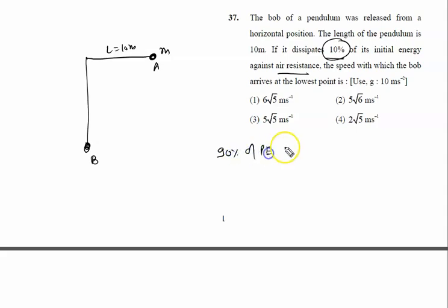potential energy at A equals kinetic energy at B. So 90 percent, that's 90 by 100, and this is at a height L with respect to B, so we write mgL